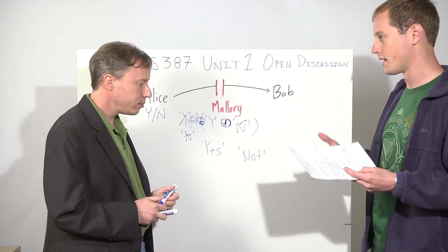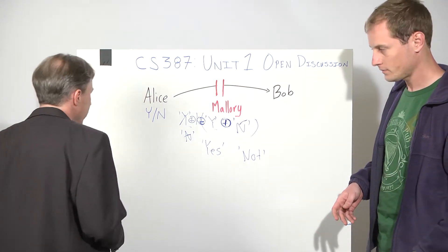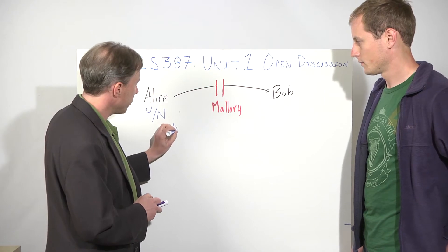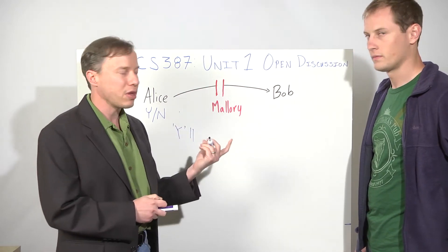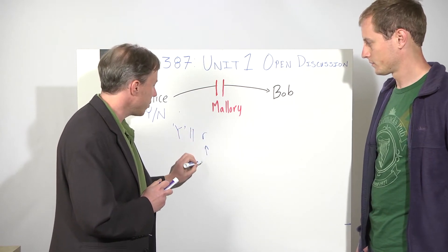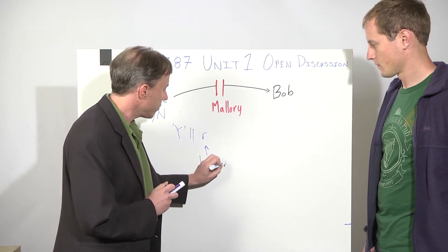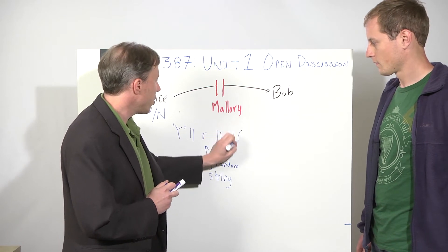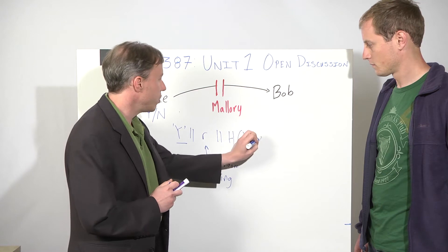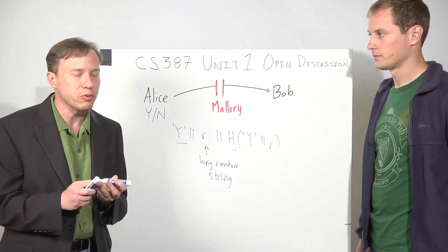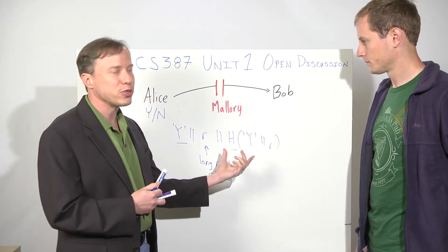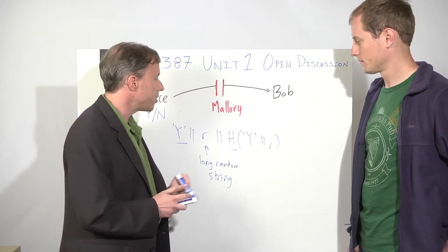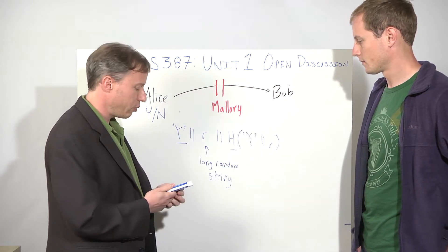He wanted to append a nonce to the message and then hash the entire message. So I think what he was suggesting, which is a good solution to this, is to take the yes or no, concatenate that with a nonce, which is just some random value R, a long random value. And then concatenate that with a hash of the answer with the nonce. And a hash function is just a function that takes some input and maps it in a complex and unpredictable way to some other value.